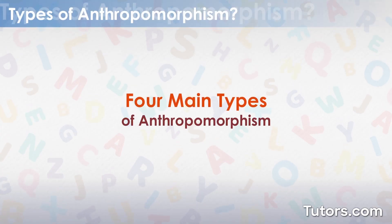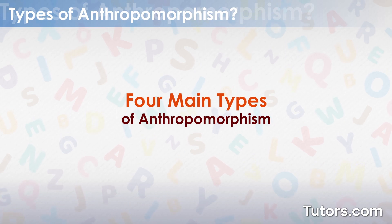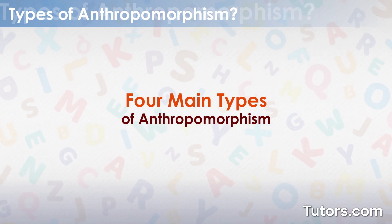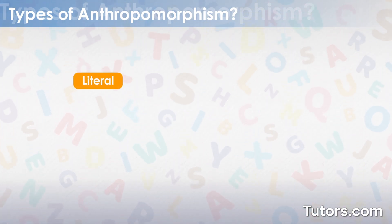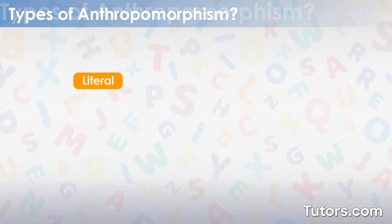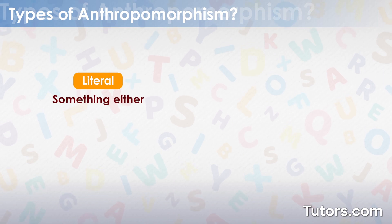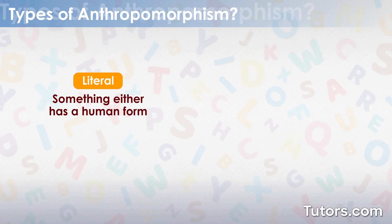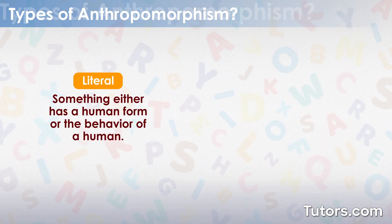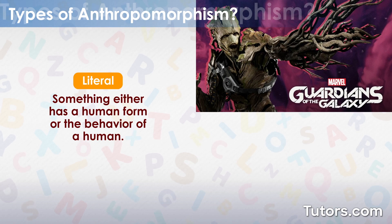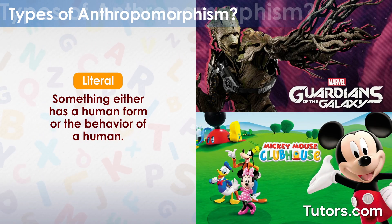There are four main types of anthropomorphism. An anthropomorphism is when something either has a human form or the behavior of a human. An example is Disney's Mickey Mouse.